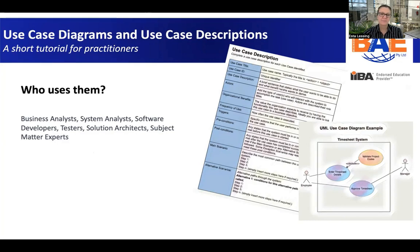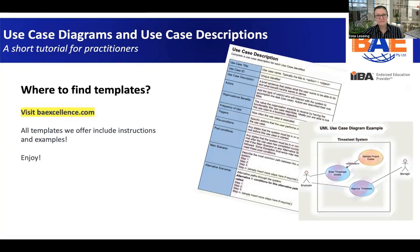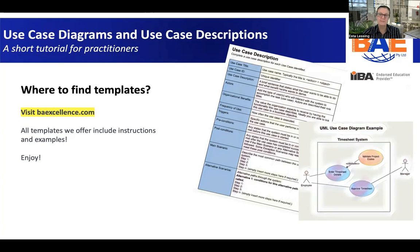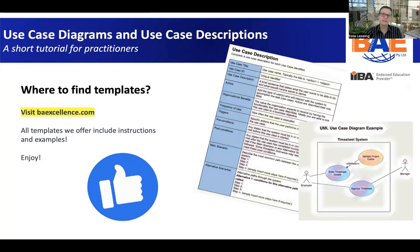Where can you find this template? Lucky for you, on the Business Analysis Excellence website — baexcellence.com — there's an amazing bundle of 50 different project templates, and you can get these two templates as part of that bundle. Go visit the site and have a look. It will save you a lot of time, skyrocket productivity on the project, and make your life easier because the bundle includes instructions on how to use the specific templates, including these ones, plus some examples. Have fun, have a look, and I'll see you in the next video.